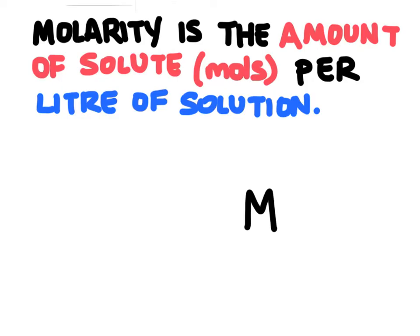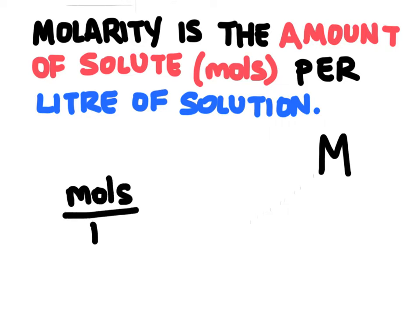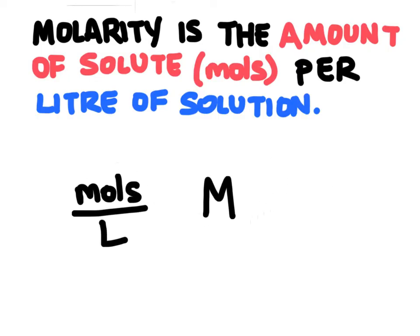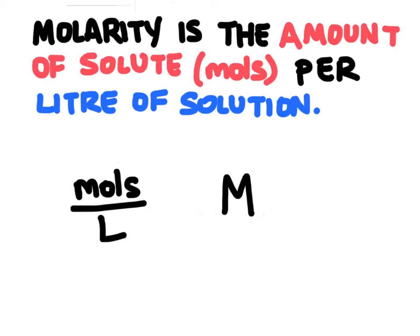If we wanted to solve and find molarity, actually calculate it, we just find the moles of solute and divide that by the liters of solution. So when you see capital M, you're really seeing moles per liter. These two things are the exact same thing.